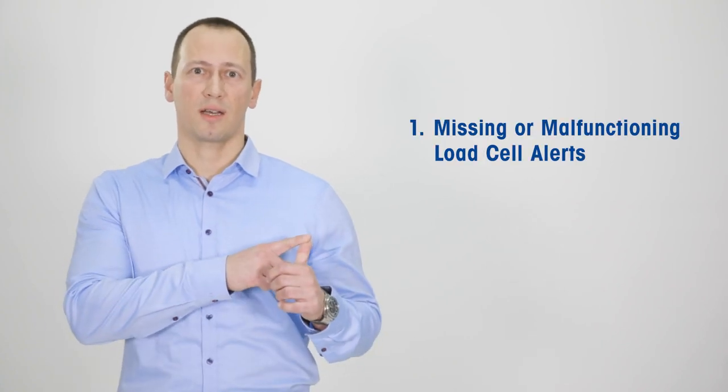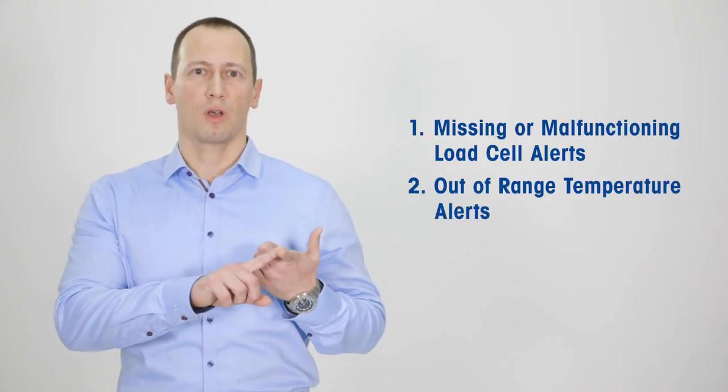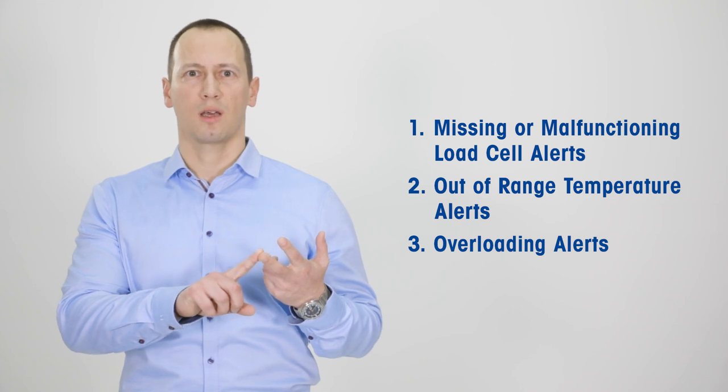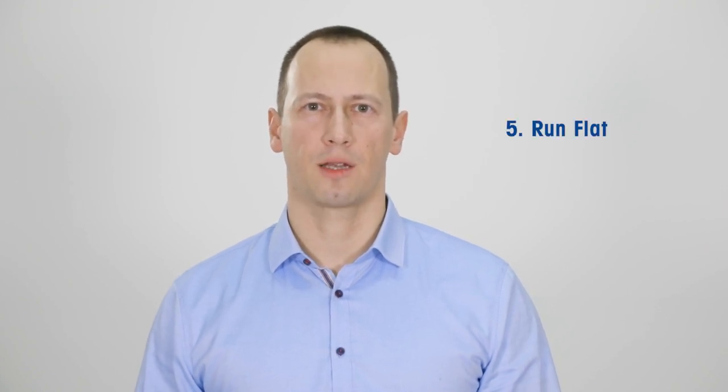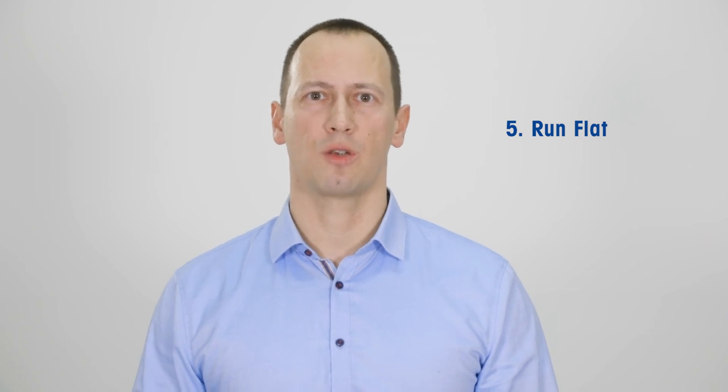The first four functions alert you about the following conditions: missing or failing load cell, out of range temperature, overload of a single load cell, and the symmetry error. If any of these events occur, we have the fifth function in our PowerCell technology, the run flat, that will make sure that your weighing system is running even in the case of error.